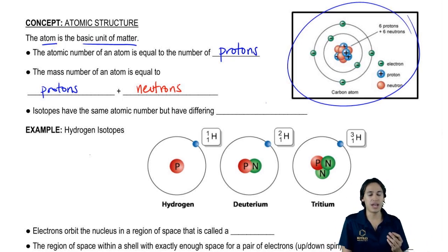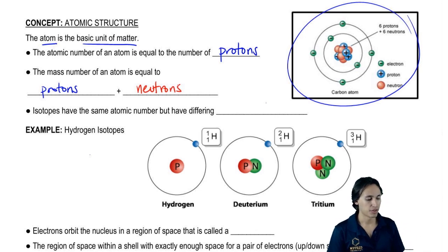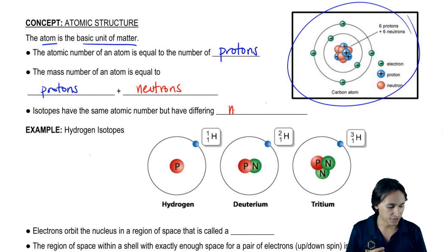And then finally we have something called isotopes. Isotopes are variations of atoms that have the same number of protons but they have different numbers of neutrons. So let's just write that in here.